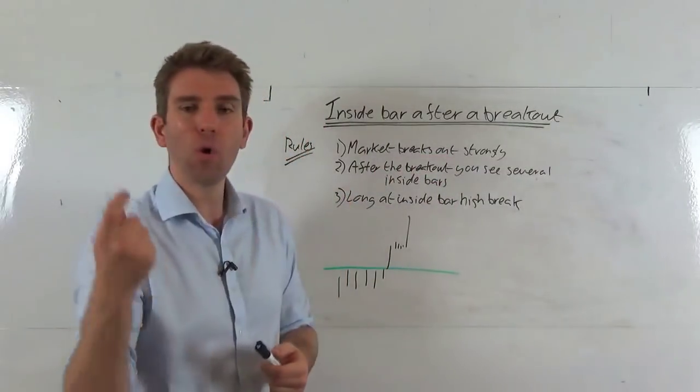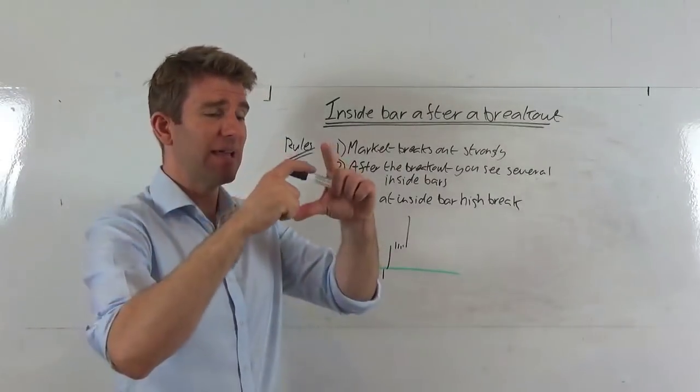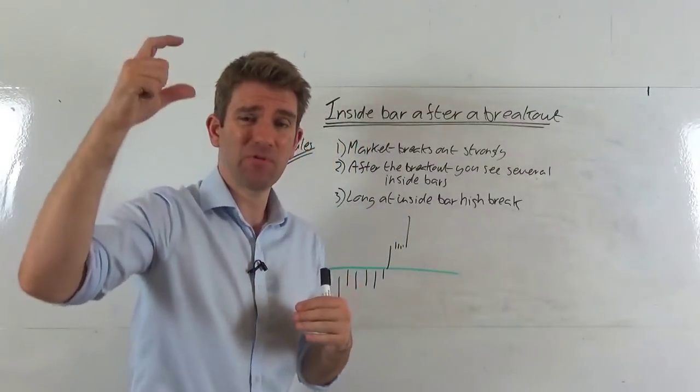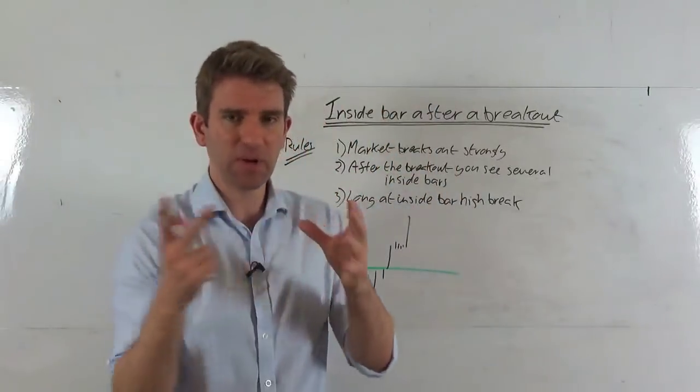Then after the breakout we want to see one or more inside bars. An inside bar is basically a narrow range inside the day of the breakout. We're looking for it below the high, hasn't broken out the high, and it's a small range as well. So why do we want to look for this? If you think of it supply and demand, right?